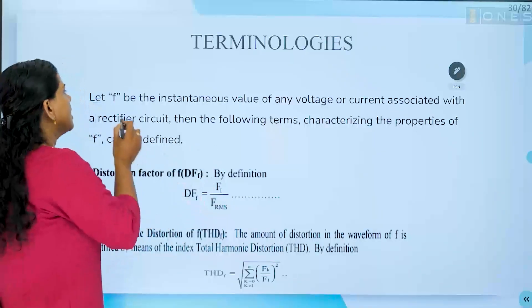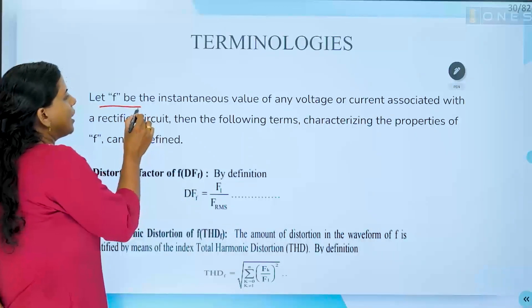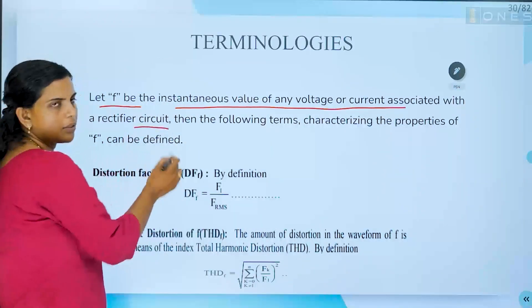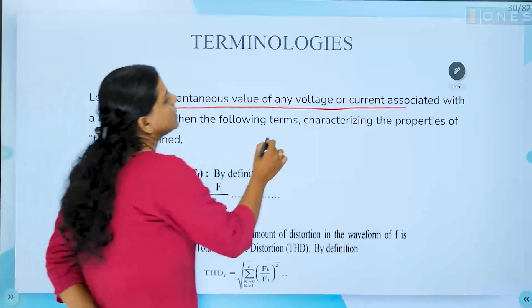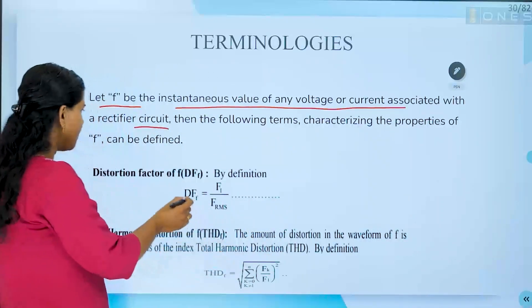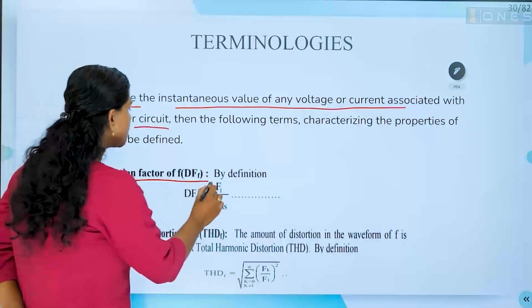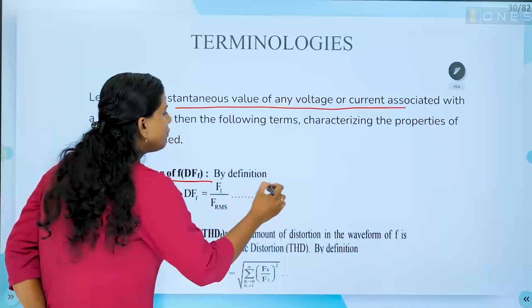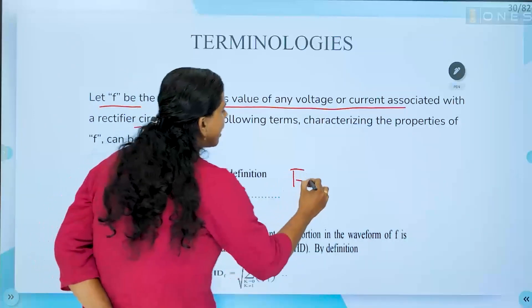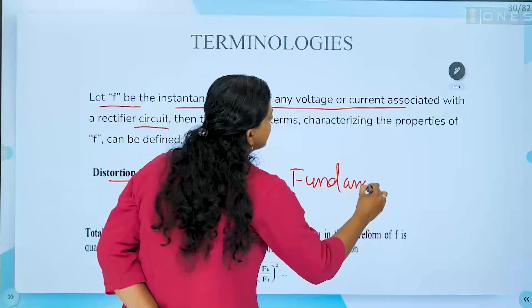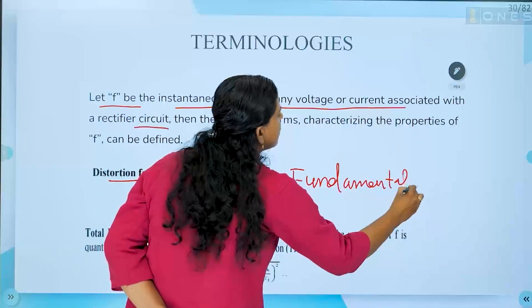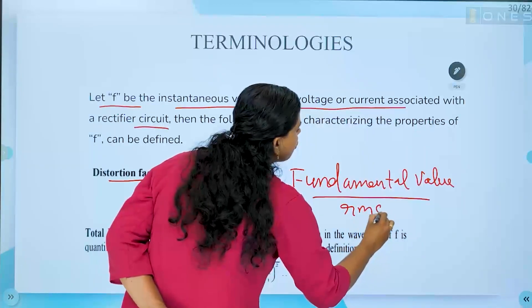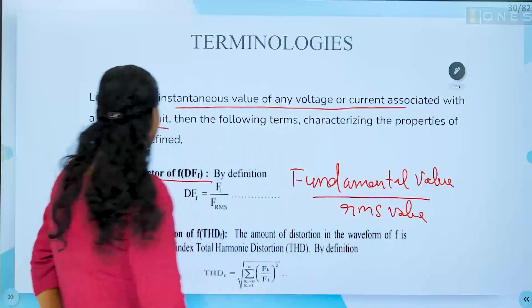We will see certain terminologies. Let us consider a function F — let it be the instantaneous value of voltage or current associated with a rectifier circuit. Then the following terms characterize the properties of F. The first is the distortion factor of F, defined as the fundamental value divided by the RMS value of F.